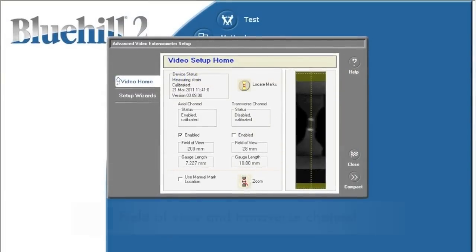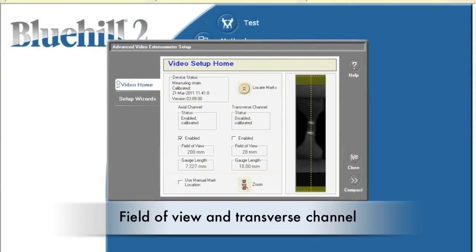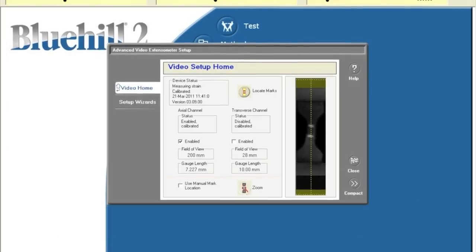The field of view is the length of the window and the maximum distance that the gauge length can be. The transverse channel monitors the horizontal distance and is usually not used.